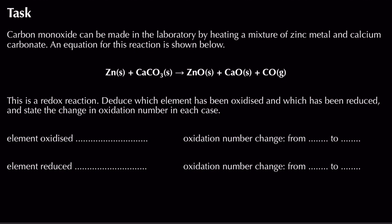Moving on to a practice question: carbon monoxide can be made in the laboratory by heating a mixture of zinc and calcium carbonate. We're given a balanced equation and told this is a redox reaction. We're asked to deduce which element has been oxidised and which has been reduced, stating the change in oxidation number in each case.